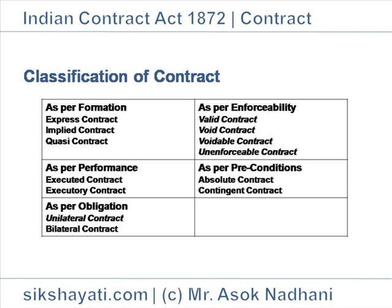Example: A mower comes to B's lawn and starts mowing voluntarily. B watches and allows him to mow. On finishing the work, A asks B to pay mowing charges. B is obliged to pay a reasonable charge, as an implied contract has been established by the conduct of A and B.